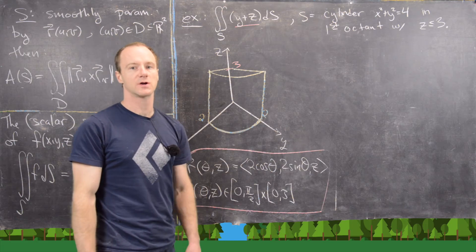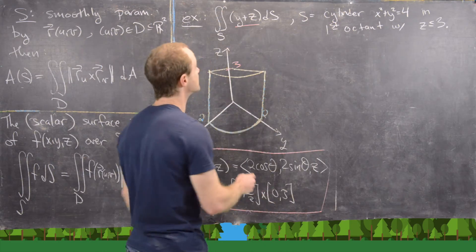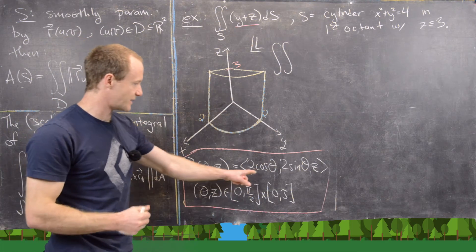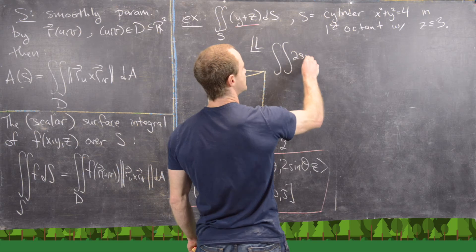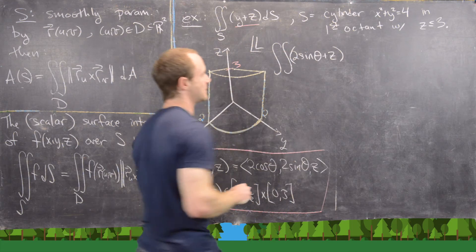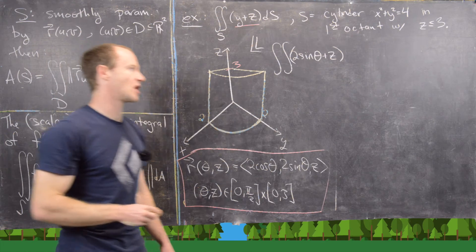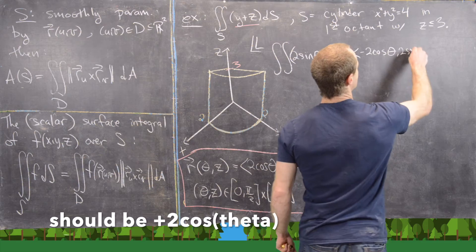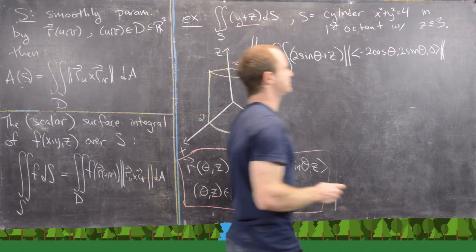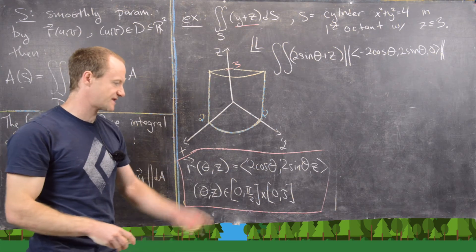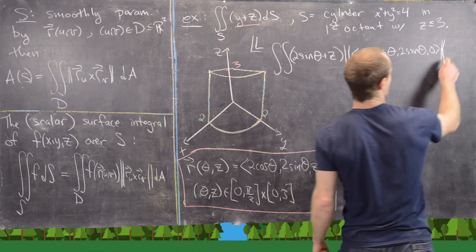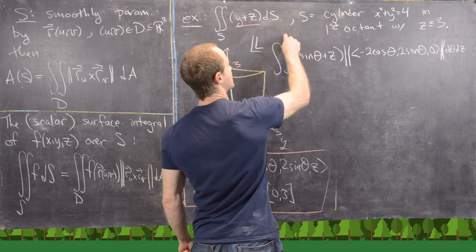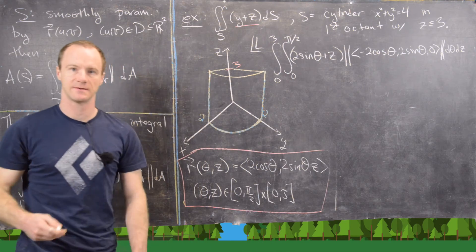Now we're ready to plug into the formula for the scalar surface integral. We need the double integral of F, and since F is y + z, we substitute the parameterization: y = 2 sin θ and z = z, giving 2 sin θ + z. We multiply by the magnitude of R_θ × R_z, which is that vector we computed, and integrate dA over the rectangular region using dθ dz, with θ from 0 to π/2 on the inside and z from 0 to 3 on the outside.